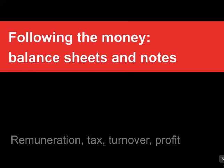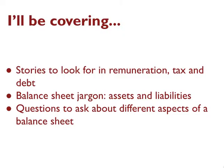Although you can find some basic stories in company accounts by looking at the profit and loss and income and outgoings, there are actually lots of other stories you can find by knowing a little bit more about some of the jargon involved in company accounts — in terms of the notes to the accounts and also by understanding what's called the balance sheet. In this video I'm going to talk about some of those stories to look for, in particular those around remuneration, in other words pay, tax and debt. I'm also going to talk about some more jargon that you'll find on balance sheets, in particular around assets and liabilities and different questions that you can ask a particular organisation based on different parts of their balance sheet.